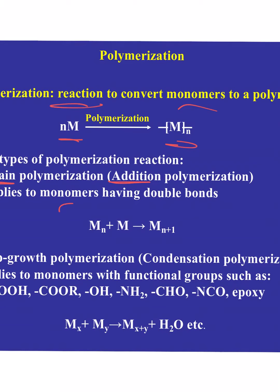Chain polymerization applies to monomers having a double bond. We talked about ethylene gas, propene gas, and styrene — all of these have a double bond. Those double bonds can break open and react with other monomers doing the same thing. It's a very simple algebraic reaction: M-sub-N plus M goes to M-sub-N-plus-1.